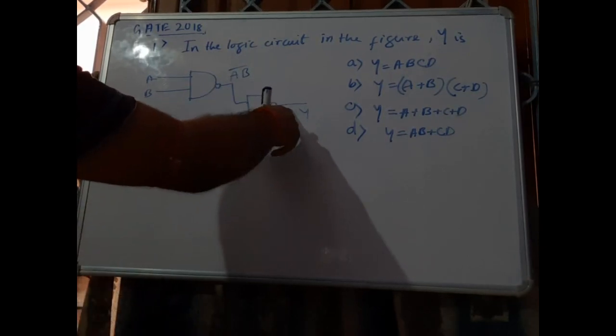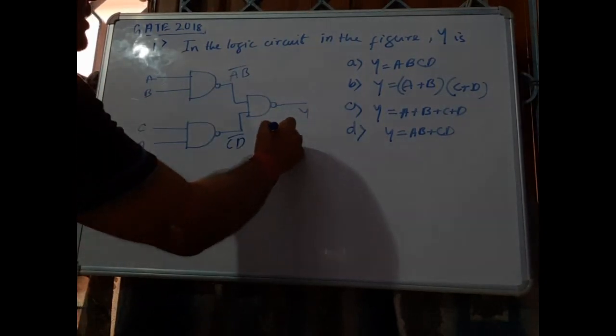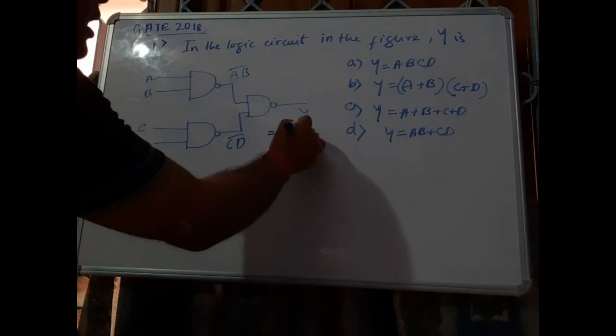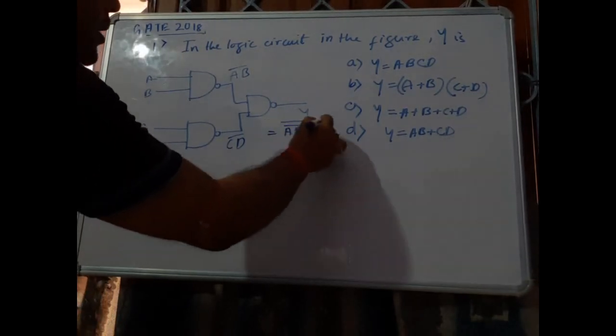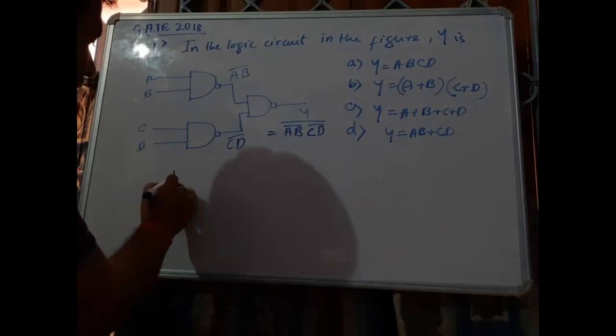Now what will be this output? y equals a b bar into c d bar, whole bar. Now we apply De Morgan's theorem.